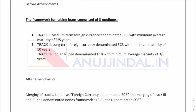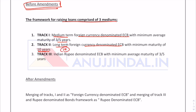Before amendments, the framework for raising loans comprised three tracks. Track one consisted of foreign currency denominated ECBs, medium term, ranging from three to five years. Track two involved long-term foreign currency denominated ECBs with a minimum maturity of 10 years. Track three consisted of Indian rupee denominated ECBs with a minimum average maturity of three to five years.